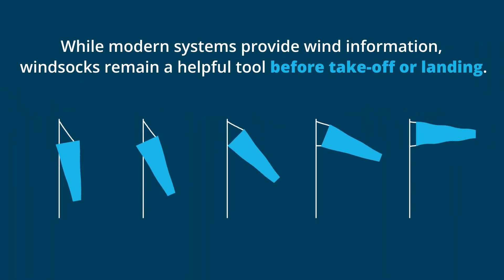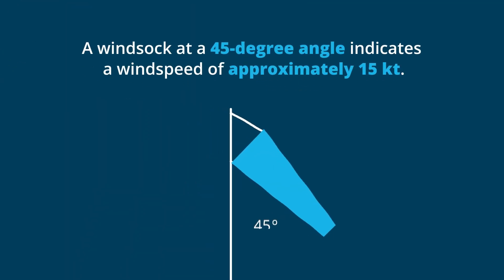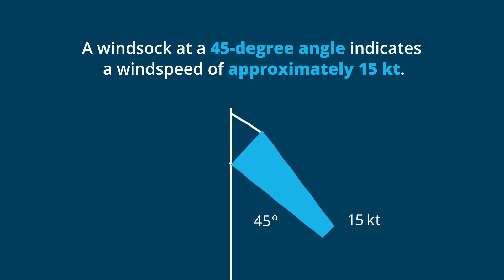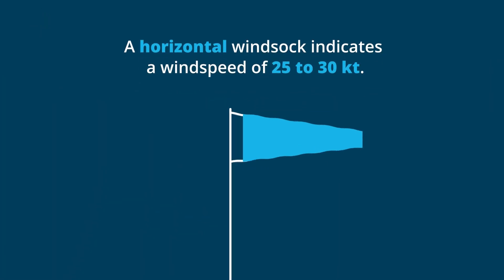While modern systems provide wind information, windsocks remain a helpful tool for assessing wind conditions before takeoff or landing. A windsock at a 45-degree angle indicates a wind speed of approximately 15 knots. A horizontal windsock indicates a wind speed of 25 to 30 knots.